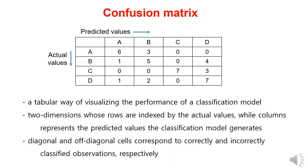So far, the performance of artificial intelligence classification models has been evaluated using accuracy, which represents the correctness of the predictions. The confusion matrix is another metric used to assess the performance of AI classification models, along with accuracy.